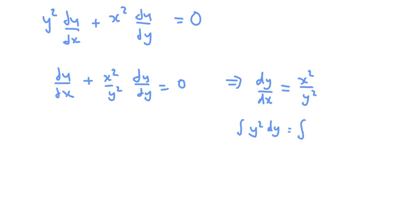Equals integral x squared dx. That's going to go as y cubed over 3 equals x cubed over 3 plus c and we can just get rid of 3, multiply it throughout by 3 and it just gets absorbed into the constant.